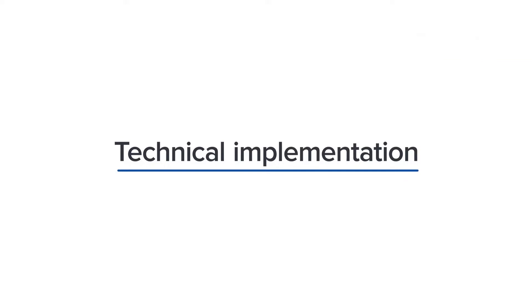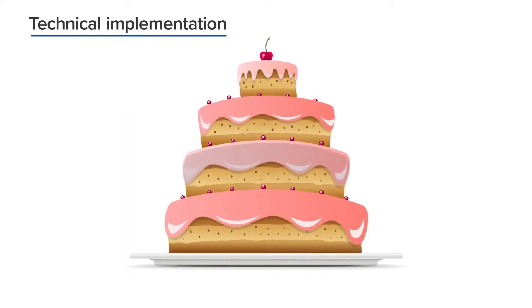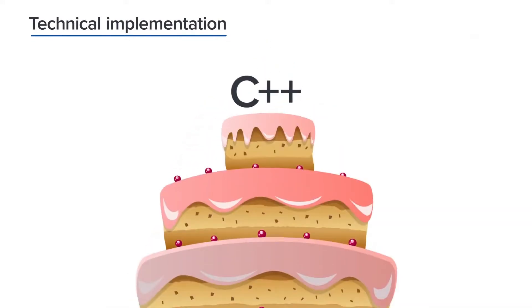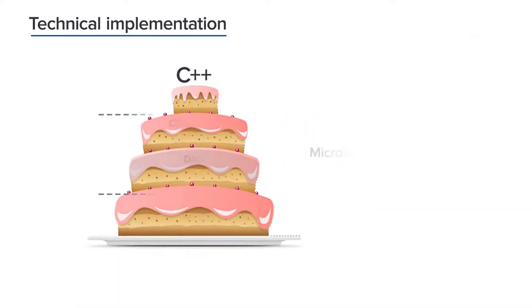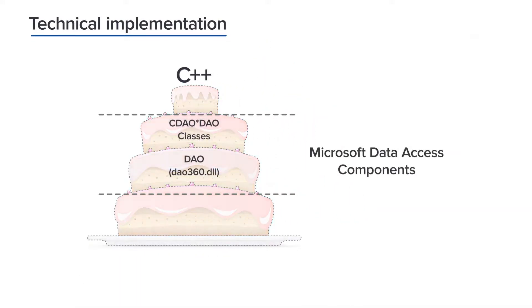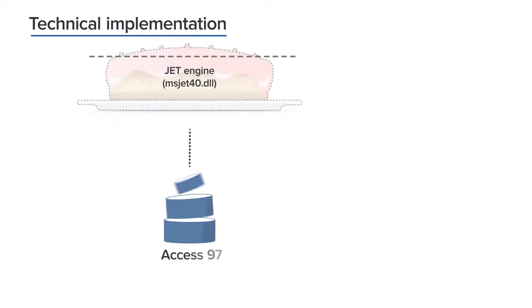Let's look at the customer's programming suite. You can imagine the existing architecture as a cake. On top of it, you can see C++ code implementing the main functionality, while in the middle, Microsoft Data Access components and a special database engine can be found. The GET engine provides interaction with the Access database.